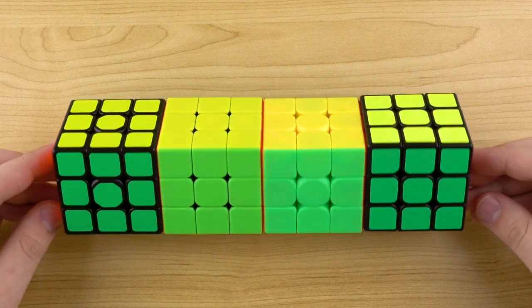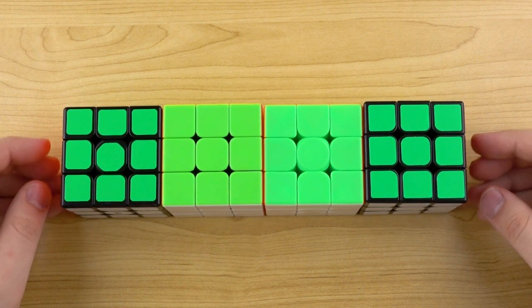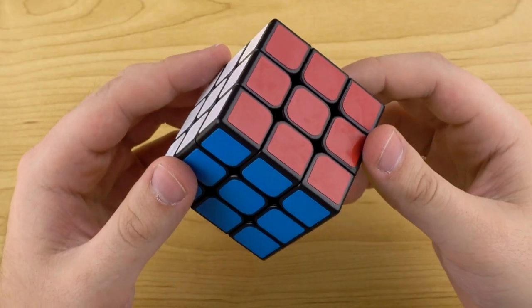Overall, I think all four options are good picks for budget 3x3s, but I definitely recommend either the Guanlong or the Mei Long over the other two.